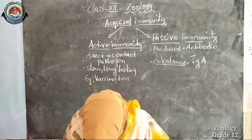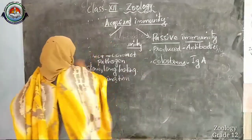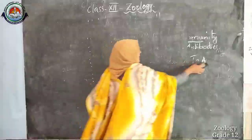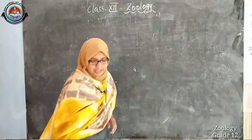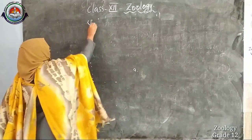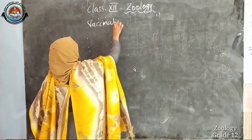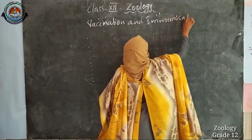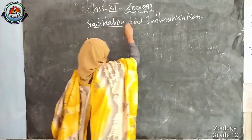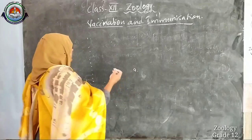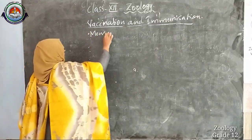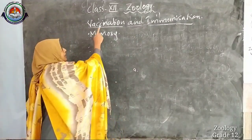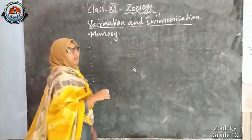The next terms are quite familiar to you — vaccination and immunization. Vaccination and immunization rely on our memory cells. The principle behind these technologies is the memory of our cells. In vaccination, weakened or inactivated — attenuated — pathogens are injected into the body.